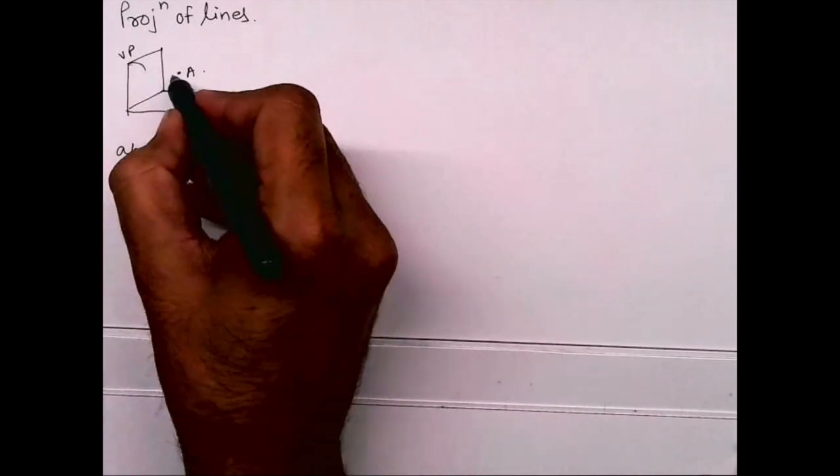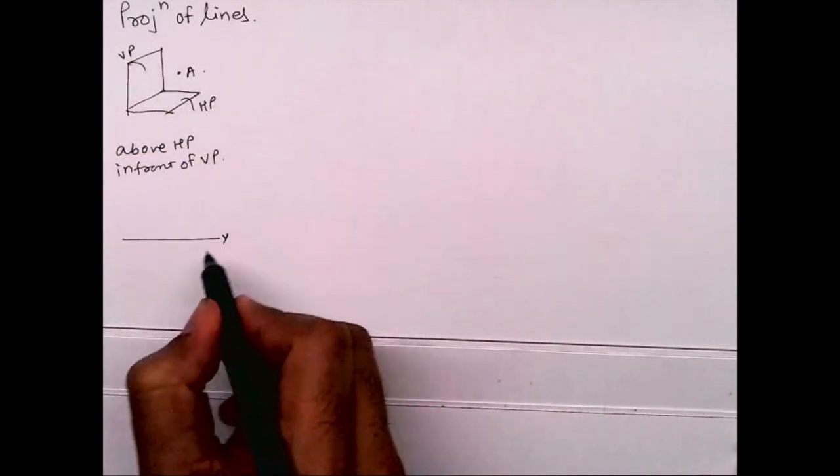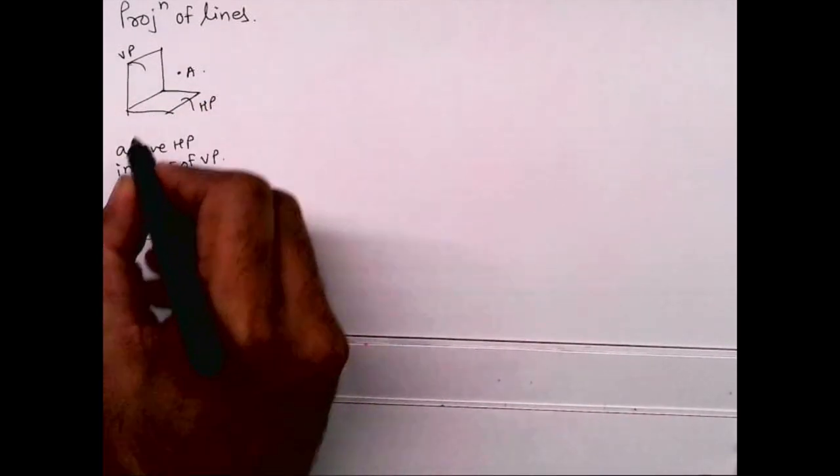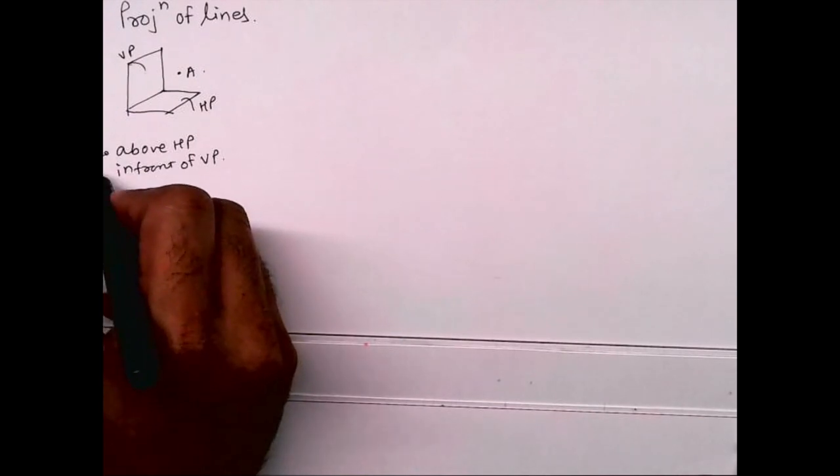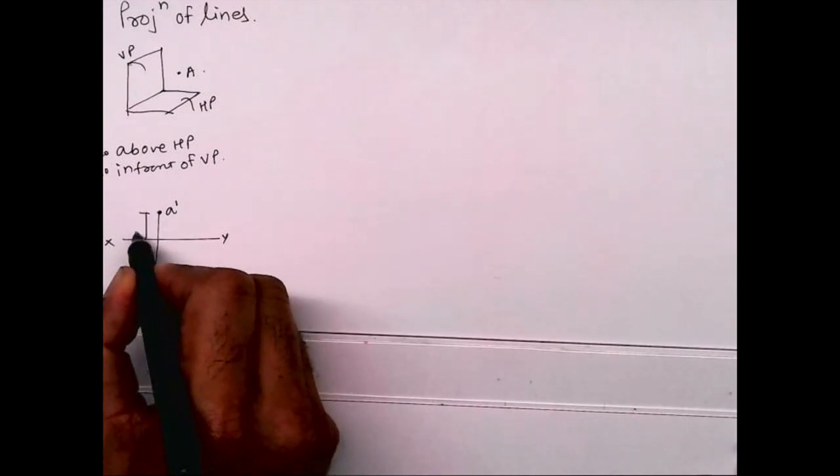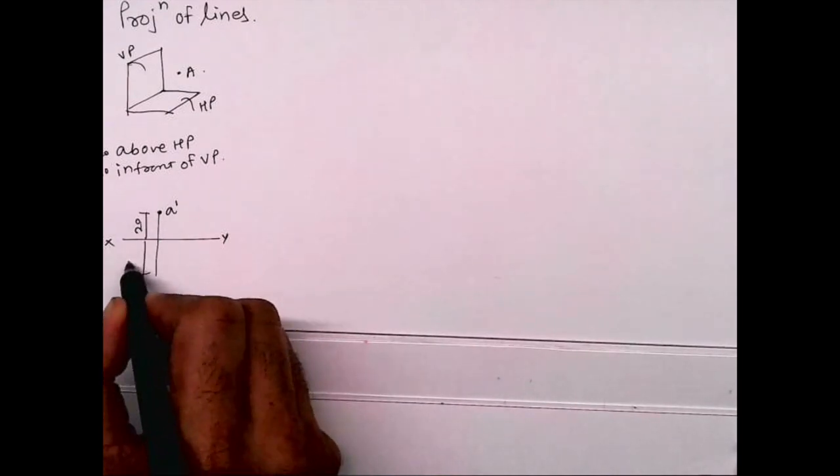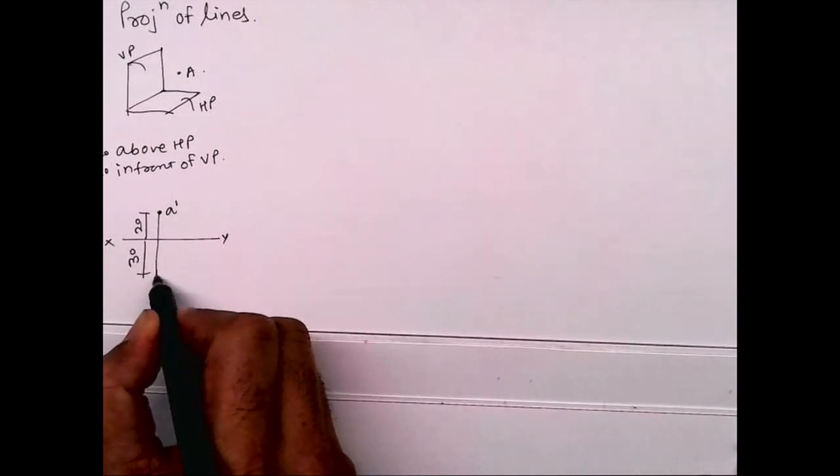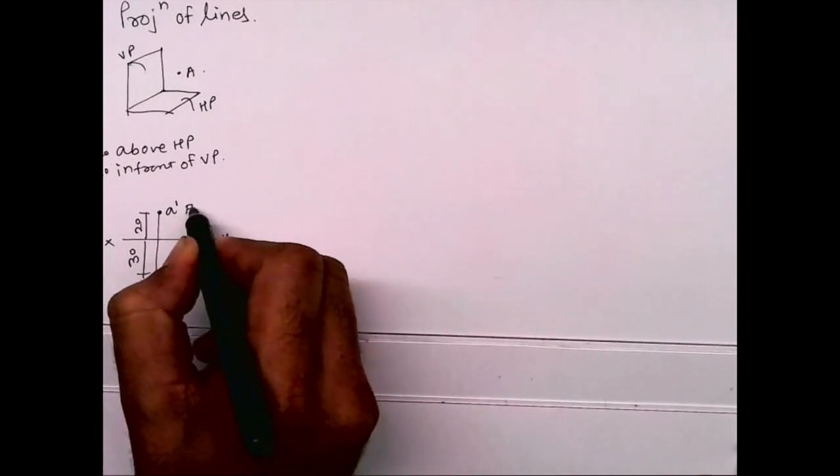Let's say if I want to be very specific, then I will say point A is 20 mm above HP and 30 mm in front of VP. So I will draw like this. Whatever is above HP will come above XY line and whatever is in front of VP will come below XY line.